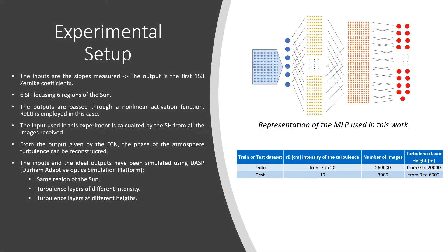In previous studies related to this work, other kinds of artificial neural network architectures were used as the reconstructor system for adaptive optics, trained with data from night and star observations. For this case, a multilayer perceptron was used with the slopes measured by the Shack-Hartmann as input.